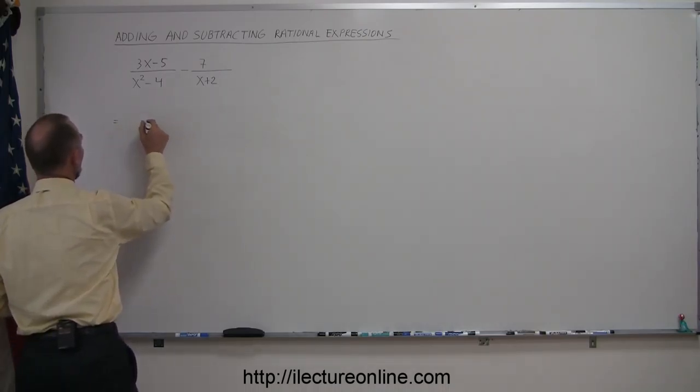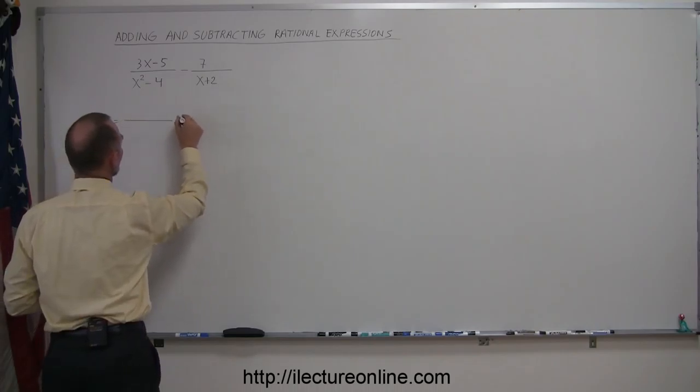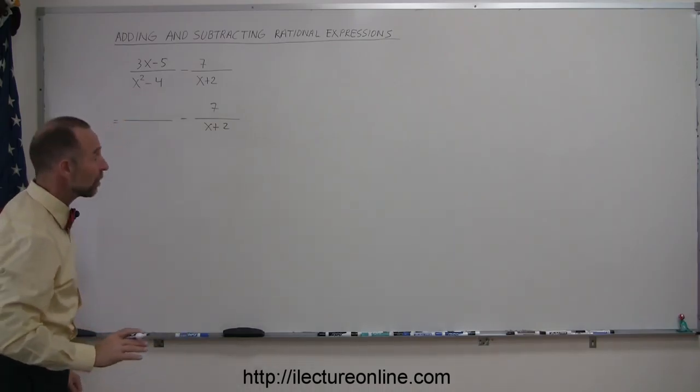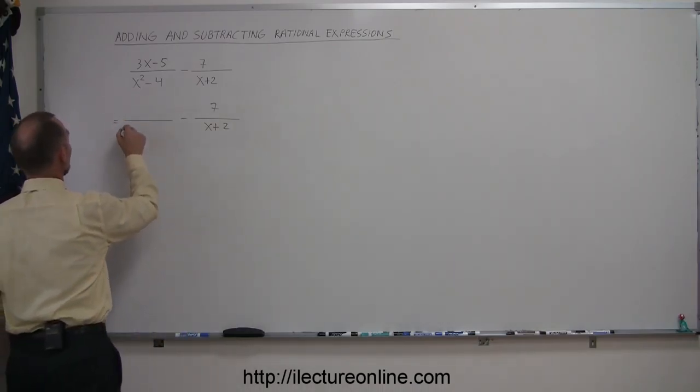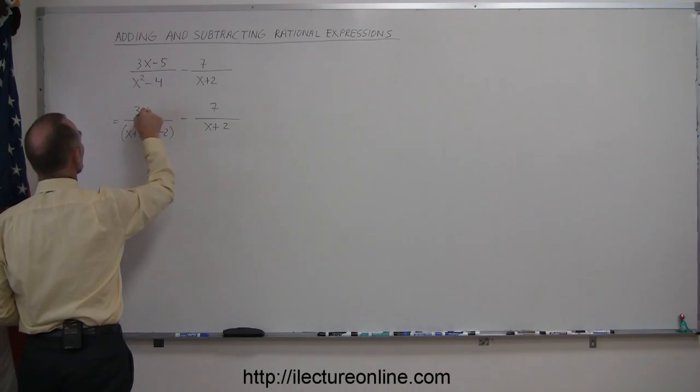Let's rewrite these two fractions, and let's factor the denominator of the first fraction. This becomes -7 over x+2, but here we realize that this is the difference of squares, and the difference of squares factors as follows. This would then become (x+2)(x-2), and the numerator still is 3x-5.